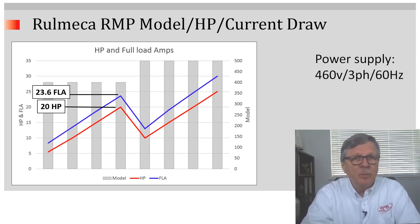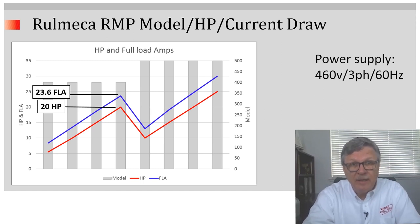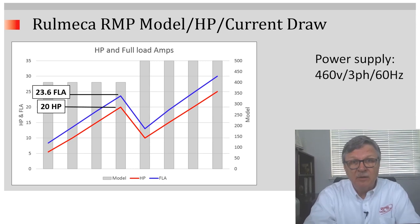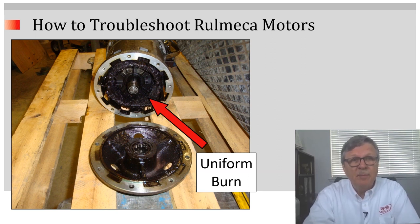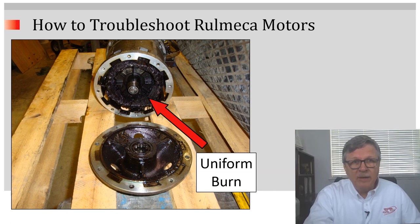Recall the graph shown previously: a 20 horsepower motor will draw 23.6 full load amps. If that motor is required to provide more than 20 horsepower, it will draw more than 23.6 amps — more like 30 or 35 amps. This is what a motor looks like when subjected to an overload condition. Notice that the stator is uniformly burned. So the question is: why was a 20 horsepower motor installed when 25 horsepower were required, and why was it allowed repeatedly to exceed full load amps?